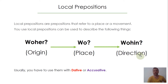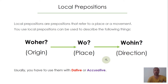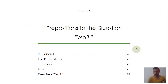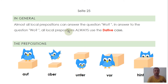And we can ask for directions with wohin — where to. Most local prepositions use dative or accusative case. I've divided the lesson about local prepositions into those three different questions, and today we start with the ones that answer the question wo.